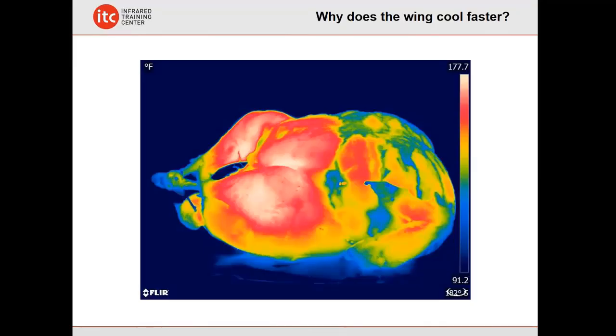Take, for example, something as simple as a turkey. You cook a turkey in an oven, you heat it up, the turkey gets warm. When it comes out of that oven, you might notice that the turkey does not cool off at the same rate. The breast meat and the legs stay warmer longer than something such as the wing. There's a real thermal reason for that, and that's to do with heat capacitance. This is something we talk about in our Level 1 training classes.